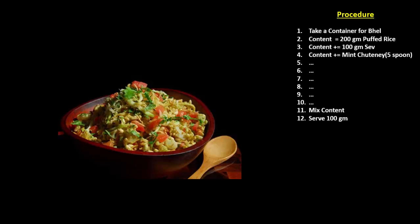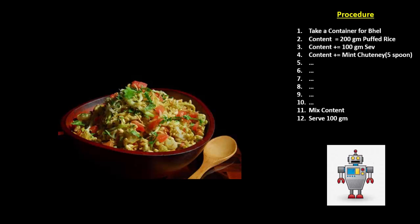So can we automate the process and get it done by machine? Yes, we can. Write the algorithm and feed the same to a robot. Now, if someone is looking for more spicy bhel, then what to do? Well, we need to add few extra spoons of chutney and rewrite the algorithm. What if we want to use some different kind of container? Will that affect the steps?